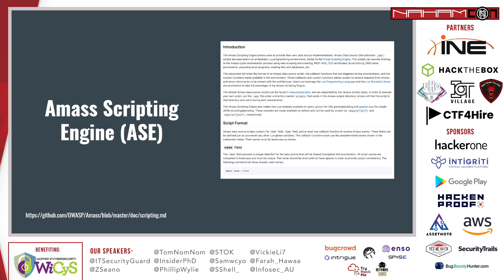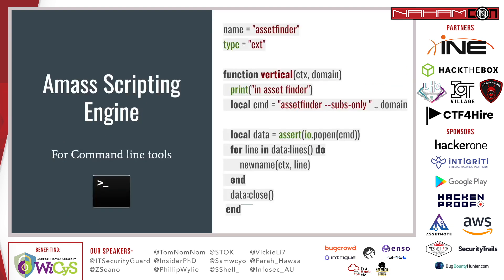How is this useful for your bug hunting, and how does it solve the problem I introduced earlier? The most important functionality of the AMOS scripting engine is to include command line tools. If you have a closer look at the actual code, it is fairly simple and straightforward. You first need to define a name for your extension — in my case, I was writing one for the tool AssetFinder. Then you define the type of the script, which is an extension. You create a function, provide it with the arguments, and specify the local command that the script will execute.